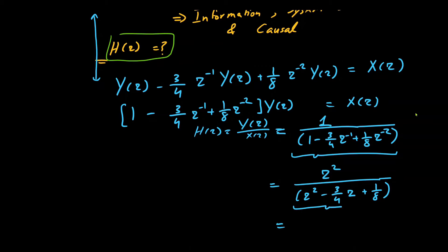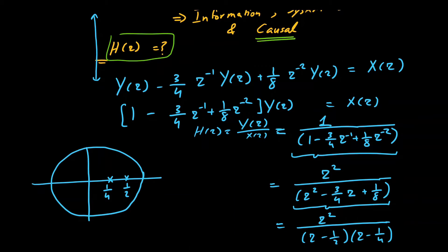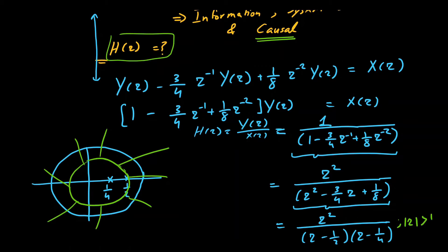Taking the roots of the denominator, we factor it as (z minus 1/2)(z minus 1/4), giving H(z) = z² / [(z minus 1/2)(z minus 1/4)]. In the z-plane, we have two poles: one at z = 1/4 and one at z = 1/2, both inside the unit circle. Since the system is causal, the ROC is the exterior of the outermost pole, so |z| > 1/2.